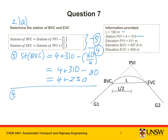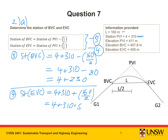Using equation 4: station of EVC = station of PVI plus L over 2 = 4+310 plus 80 = 4+390. So now we have the station of BVC as 4+230 and the station of EVC as 4+390.